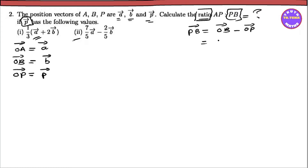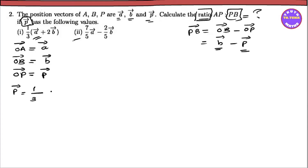The OB vector is small b vector, and OP vector is small b vector. If you write small b vector, you write 1.3 into a vector plus 2b vector.